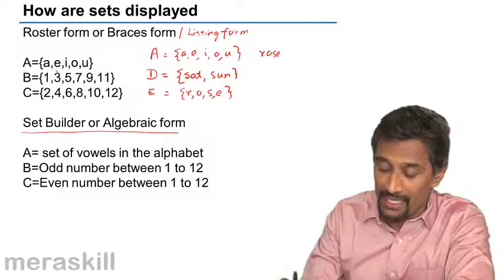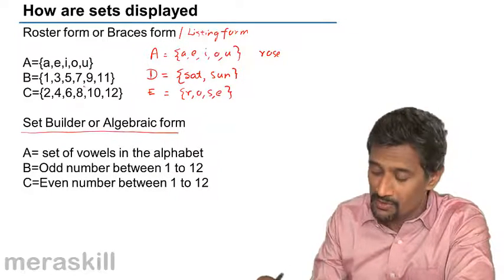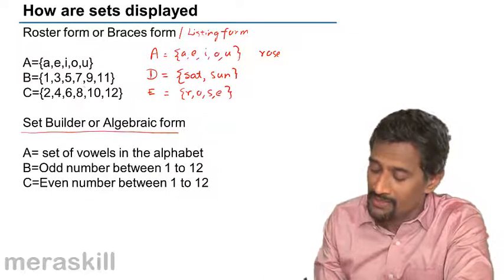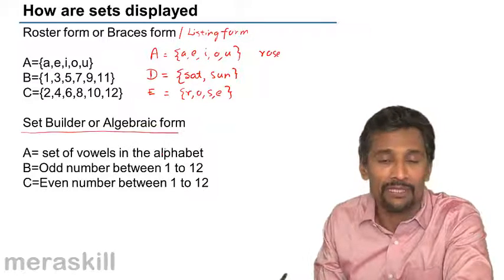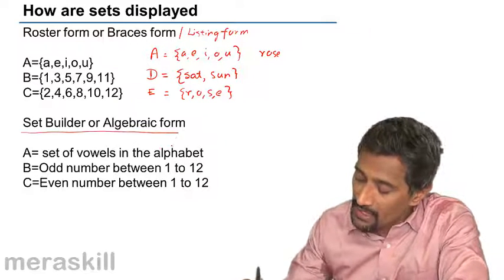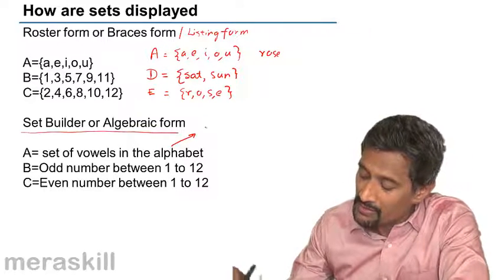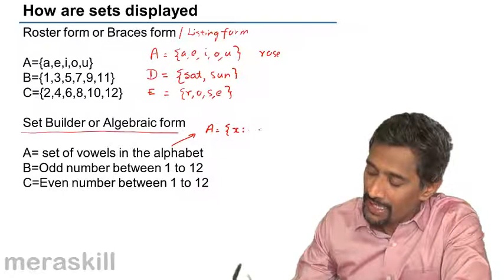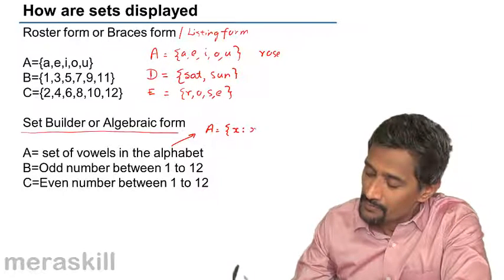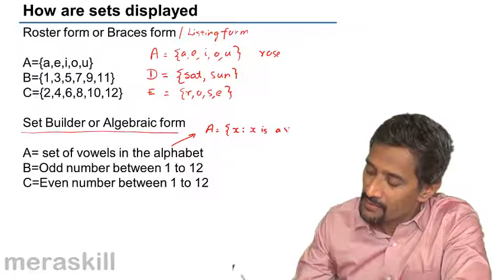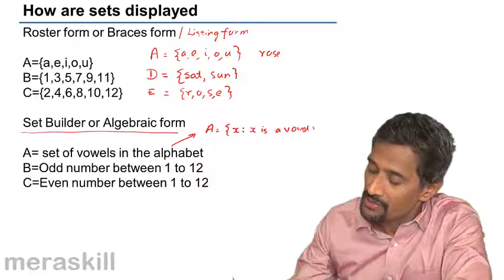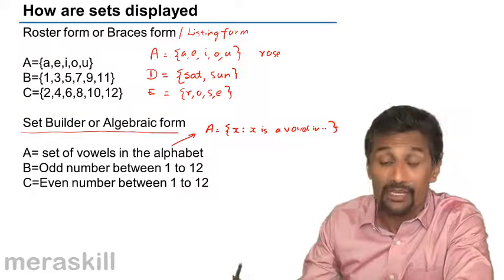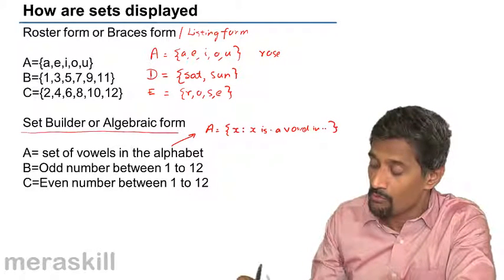The same thing can be written in set-builder or algebraic form. For example, A is the set of vowels, so we say it is the set of all X such that X is a vowel in the English alphabet. You are writing it in the form of a description.